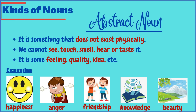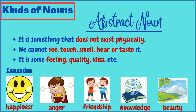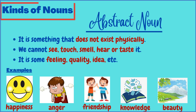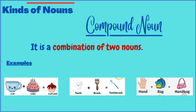As opposed to the concrete noun is the abstract noun, which does not exist physically and can't be perceived through any of the five senses. It can be some feeling, quality, or an idea. Examples include happiness, anger, friendship, knowledge, and beauty. None of these examples exist physically, and hence can't be perceived through the five senses. Now coming to the compound noun.